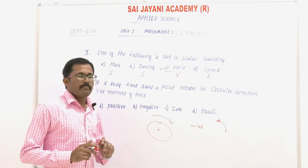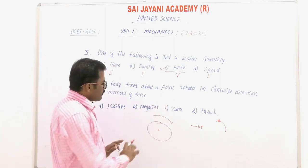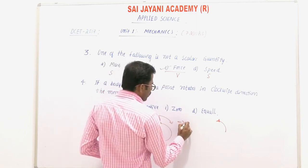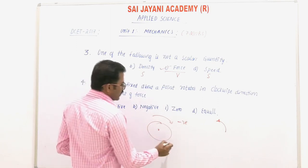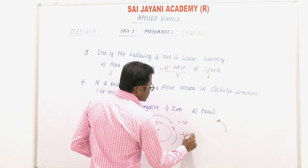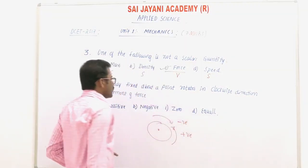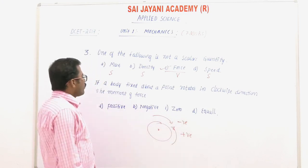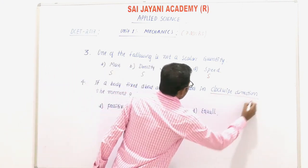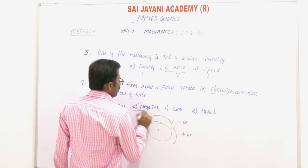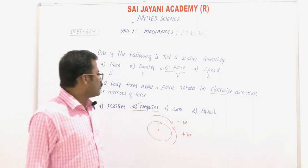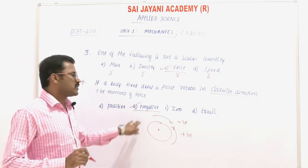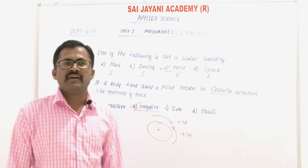If a body rotates in clockwise direction, the moment of force is negative. If the same body rotates in counter-clockwise direction, then the moment is taken as positive. So for clockwise direction we have negative moment of force, and for counter-clockwise we have positive moment of force. Option B, negative, is the right answer.